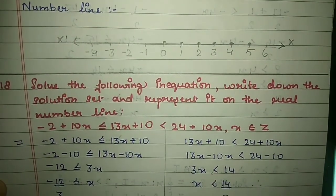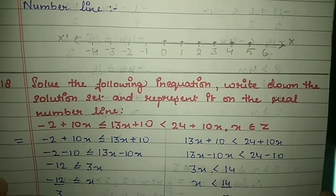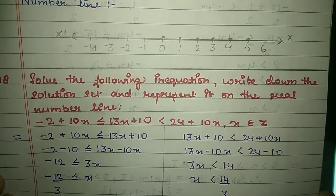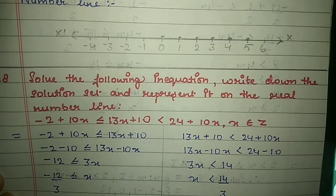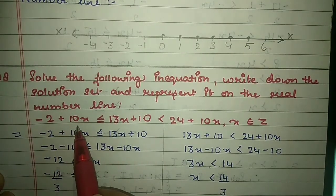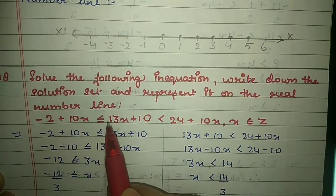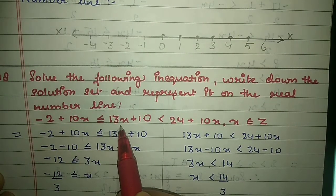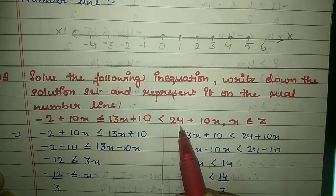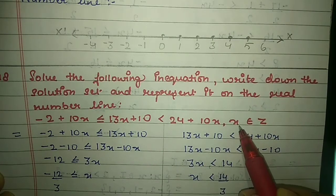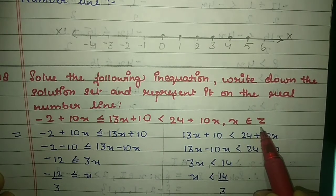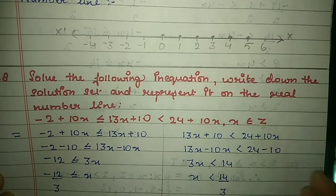Next question from 2018: solve the following inequation, write down the solution set, and represent it on the number line. The inequation is minus 2 + 10x ≤ 13x + 10 < 24 + 10x, where x belongs to Z (integers).